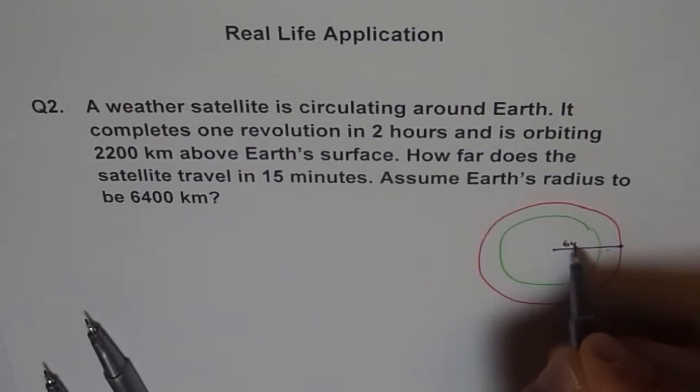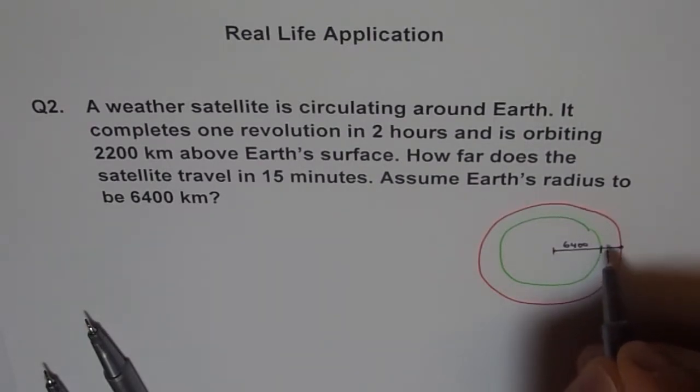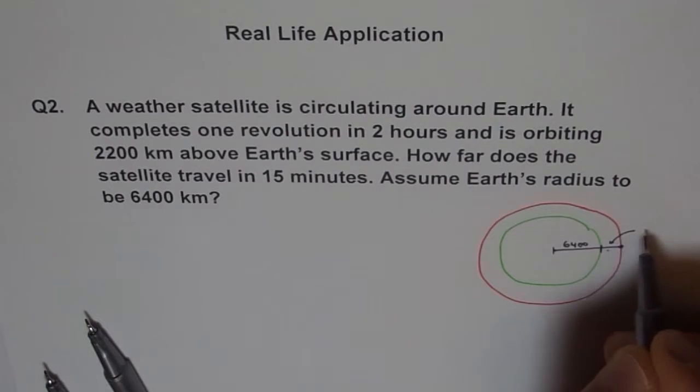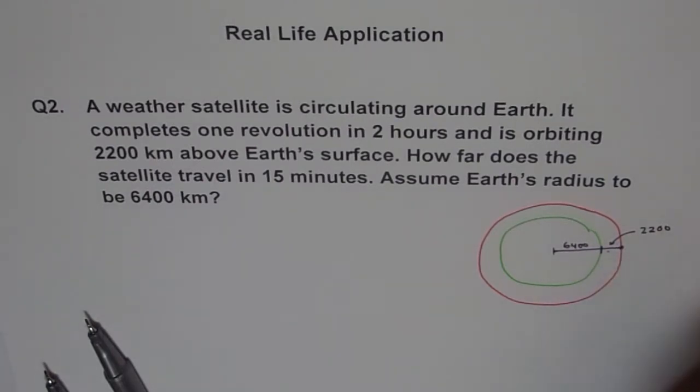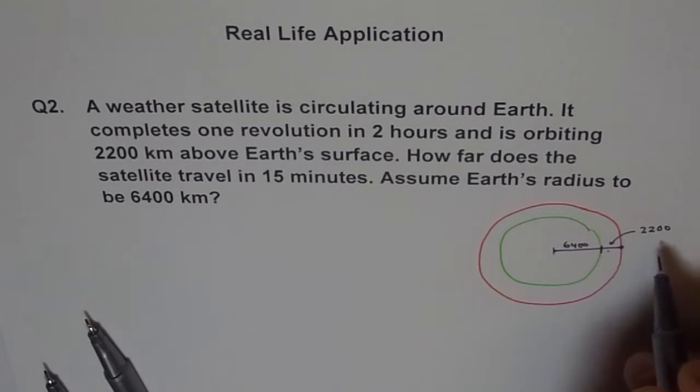We'll write 6400 is from here to here. And then we'll add 2200 which is this, right? We'll say this is 2200. So the total will be, you've got to add them both, right? So 2200 and 6400 will give us 8600.